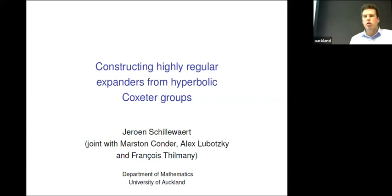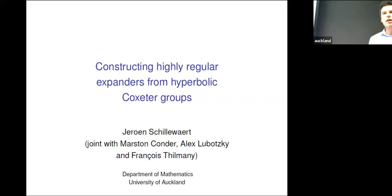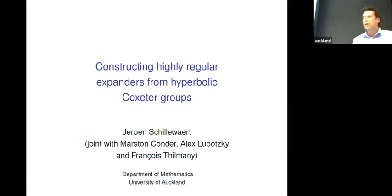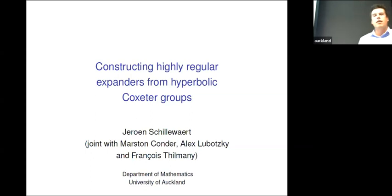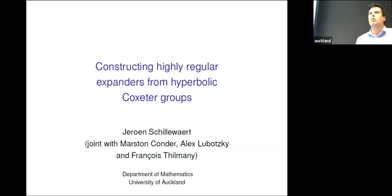This will be a little bit unusual in the sense that there are also about 20 people in the room here, so I'll try to stay within the focus of the camera. This is joint work with my colleague Marston Condor, Alex Lubotzky, who I think most people will know, and François Thilmany, who is a talented postdoc in Belgium. The goal of the talk is to explain how you can obtain a particular family of graphs called expander graphs by using the theory of hyperbolic Coxeter groups.